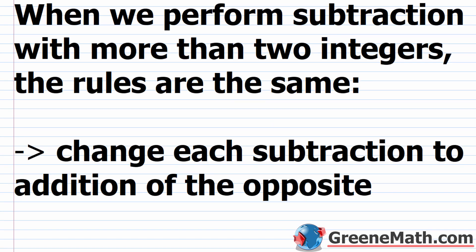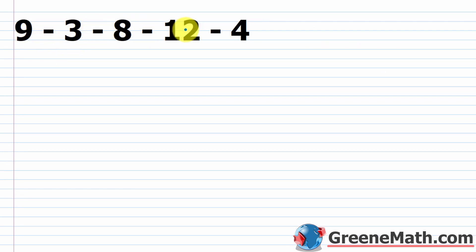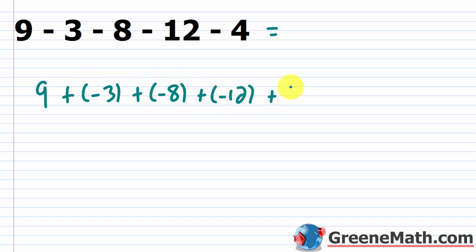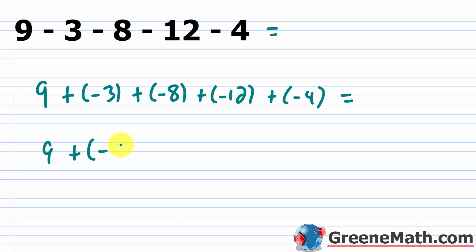Now let's talk about multiple operations — subtracting more than two integers. The rules are the same: change each subtraction to addition of the opposite. This helps because addition is commutative, so you can add in any order. For 9 minus 3 minus 8 minus 12 minus 4: keep the 9 unchanged, then everything else becomes plus negative — so plus negative 3, plus negative 8, plus negative 12, plus negative 4. Add all the negatives together: 3 plus 8 is 11, plus 12 is 23, plus 4 is 27, giving negative 27.